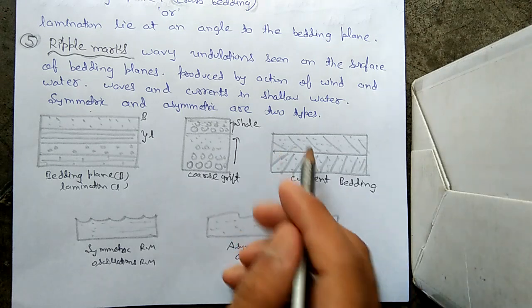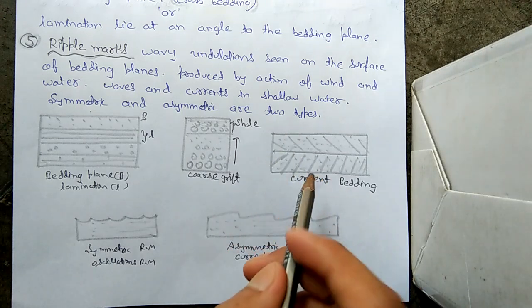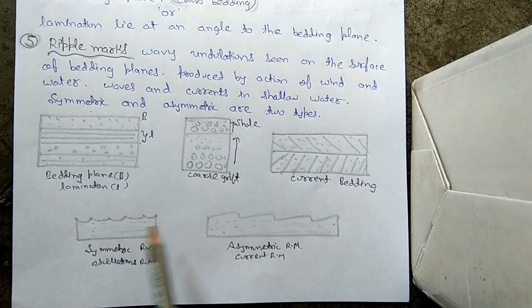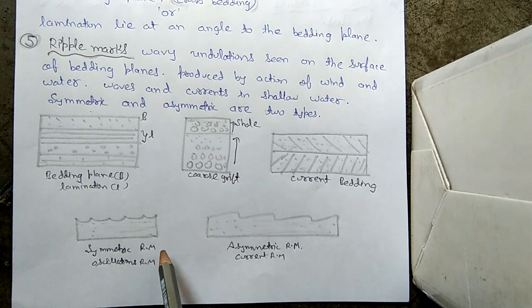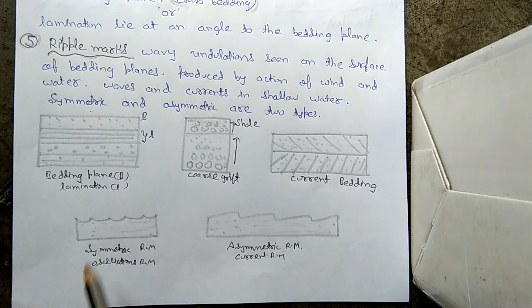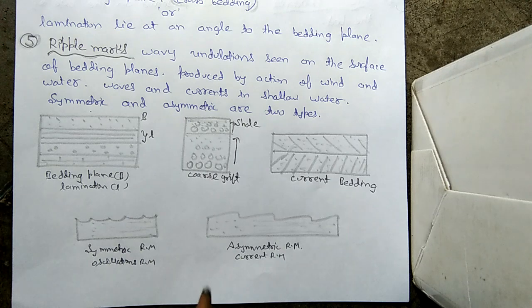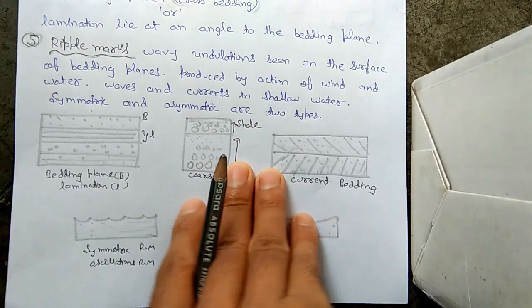The overlying plane making an angle with the lamination is called cross bedding or current bedding. These are the ripple marks made by action of wind and water. Symmetric ripple marks are also known as oscillation ripple marks, while asymmetric ripple marks are also known as current ripple marks. These were the major sedimentary structures; now we will discuss the minor structures.